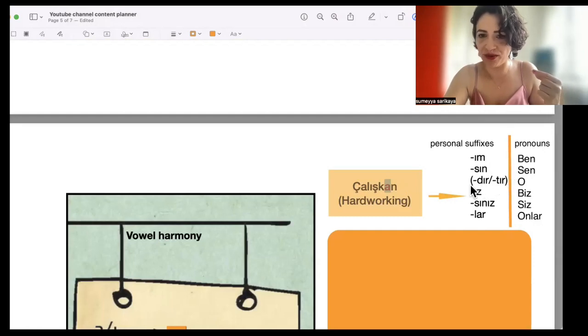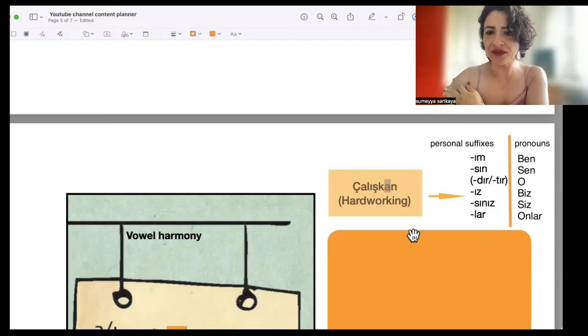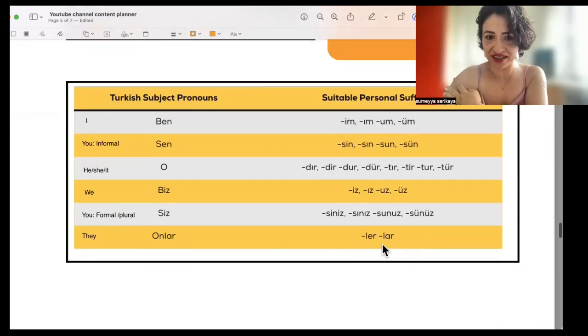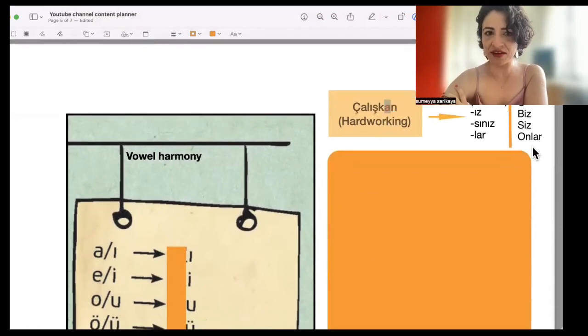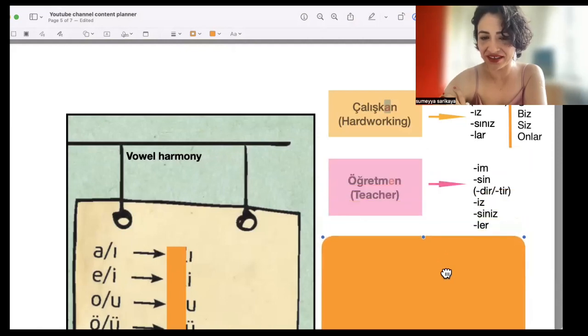You can drop the personal suffix for o. So, biz çalışkanız. Siz çalışkansınız. Onlar çalışkanlar. As I told you before, we have two selections for onlar. You get to choose depending on the vowel, either if it's a soft vowel or hard vowel. Here çalışkan is a hard vowel, so you choose lar. But if it was öğretmen as an example here, we choose ler because it's a soft vowel.